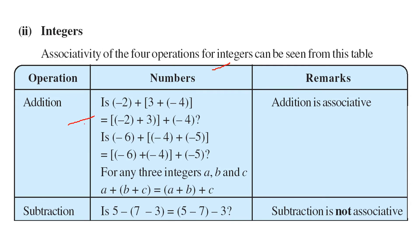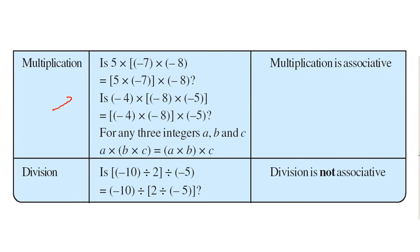For integers, addition is associative — if you add these two together and then add the third, or group them differently, the result is the same. So a plus (b plus c) equals (a plus b) plus c. Subtraction is not associative under integers since the sign changes with different groupings. Multiplication is associative. Division is not associative — for example, minus 10 divided by 2 divided by minus 5 gives a different result depending on the grouping.